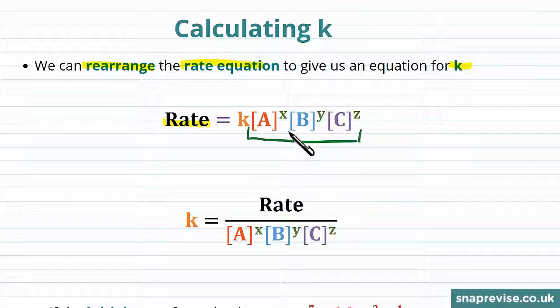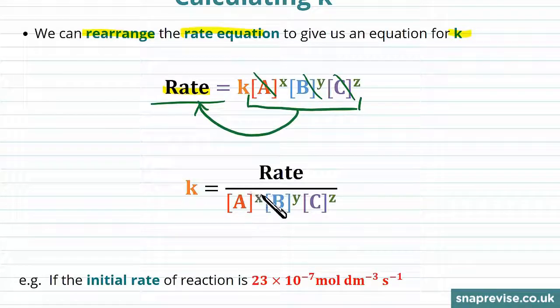What this does is moves all of these concentrations raised to their powers round to the other side of the equation, leaving K effectively on its own and the concentrations appear on the bottom side of a fraction. So now we have the rate divided through by the concentrations.